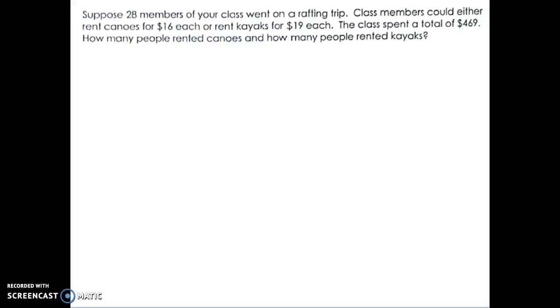So the first thing you have to do is define our variables. You can use any variable you want to, but just make sure you write it down so you know what is what. When it asks you the question, it asks you what two variables we're going to use. In this case, it's asking how many people rented a canoe and how many people rented a kayak. So I'm just going to say C for canoes and K for kayaks.